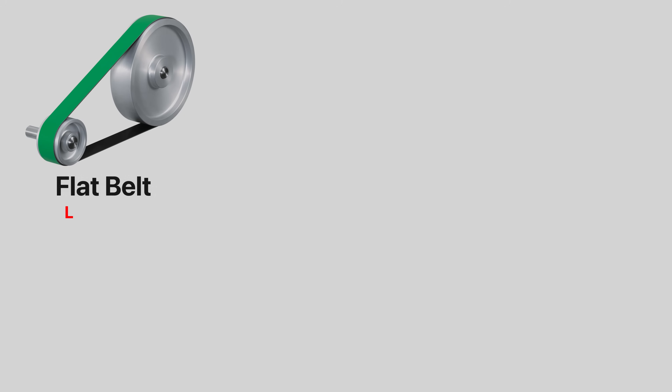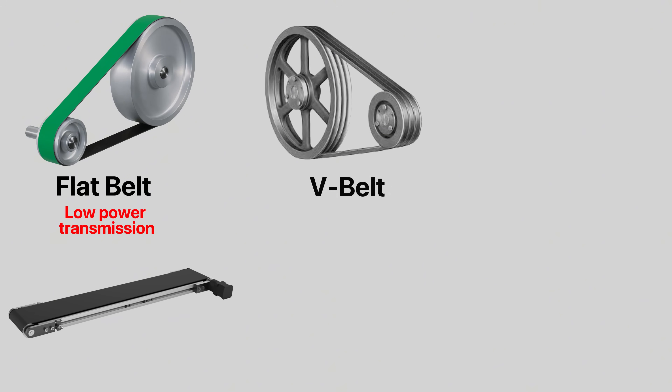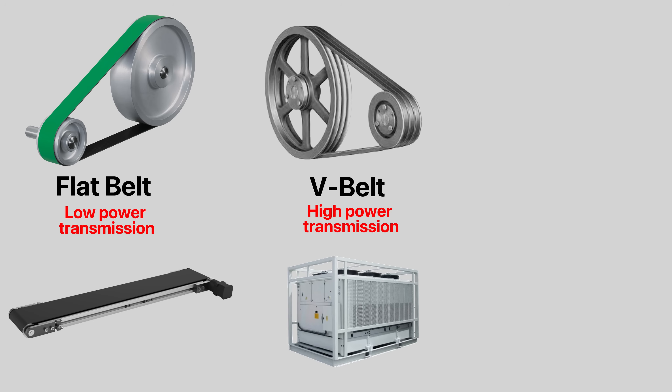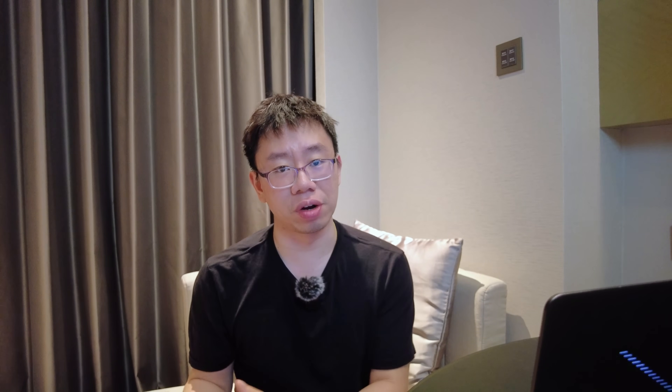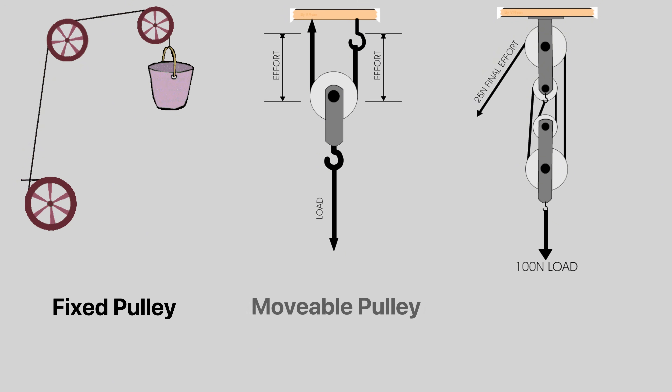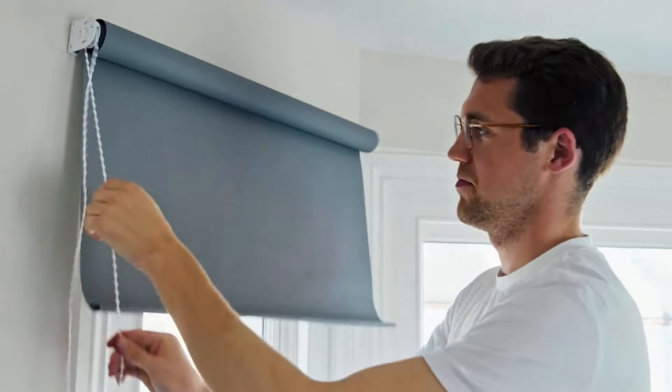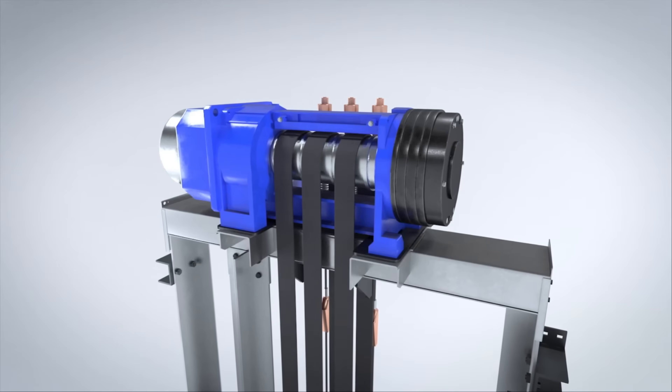Just as important as gears, belts and pulleys are used for transmitting power across distances. The three most common types of belts are flat belts for low-power applications like conveyor systems, V-belts for high-power systems like HVAC systems and industrial equipment, and timing belts for precise motion control in engines and robotics where synchronization is critical. Pulleys leverage a wheel used in conjunction with belts as well as rope and cables to change the direction of force, transmit power, and reduce effort. They come in various configurations such as fixed, movable, and compound, and are used on flag poles and window blinds, cars, construction cranes, gym equipment, and elevators.